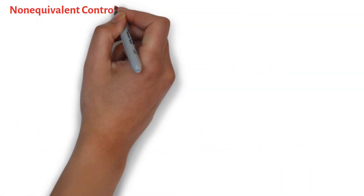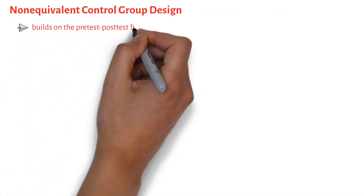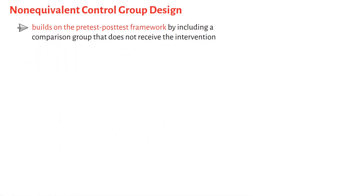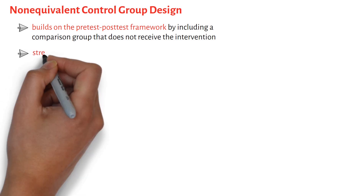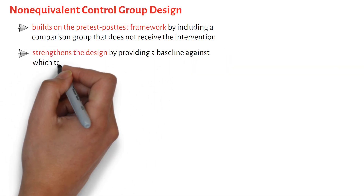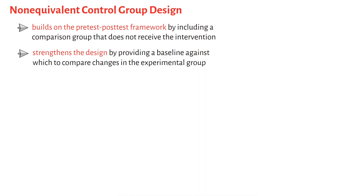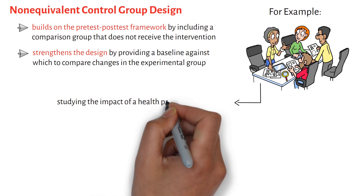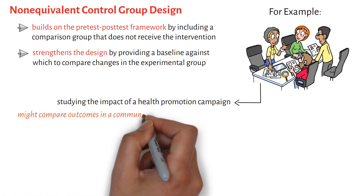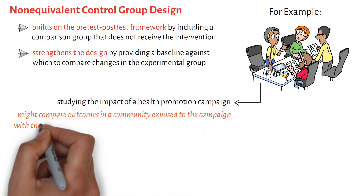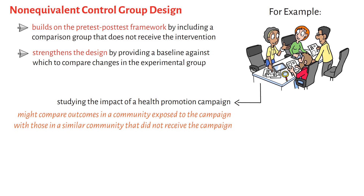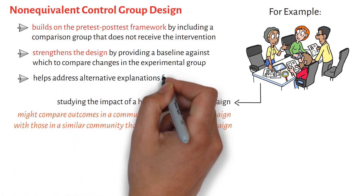The non-equivalent control group design builds on the pre-test/post-test framework by including a comparison group that does not receive the intervention. This addition strengthens the design by providing a baseline against which to compare changes in the experimental group. For example, researchers studying the impact of a health promotion campaign might compare outcomes in a community exposed to the campaign with those in a similar community that did not receive it. By incorporating a control group, this design helps address alternative explanations for observed effects.